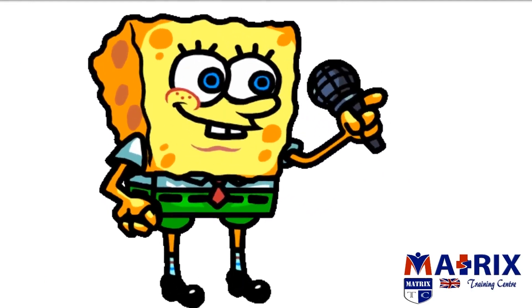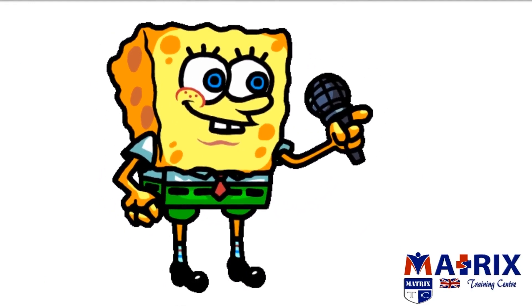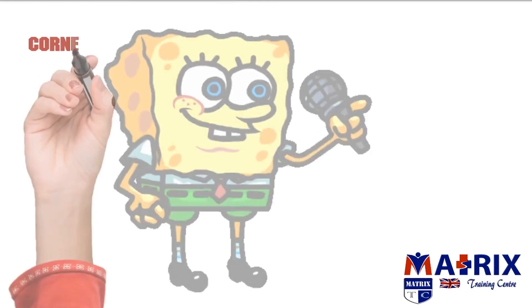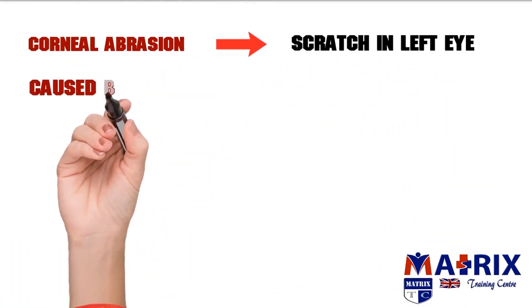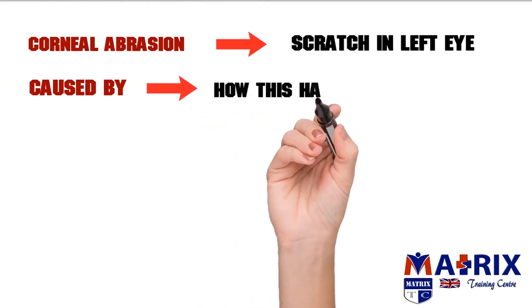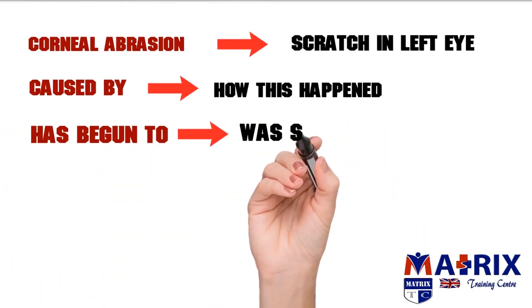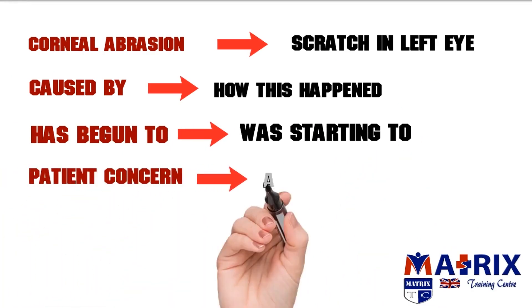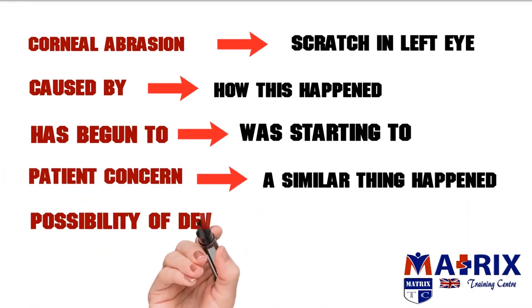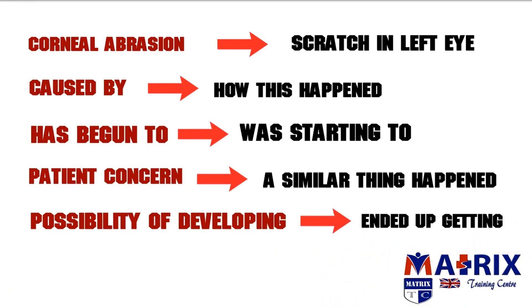Here is a list of paraphrased keywords. 'Corneal abrasion in left eye' became 'a scratch in left eye.' 'Caused by' became 'how this happened.' 'Has begun to' became 'was starting to.' 'Patient concern' became 'a similar thing happened.' And 'possibility of developing' became 'ended up getting.'